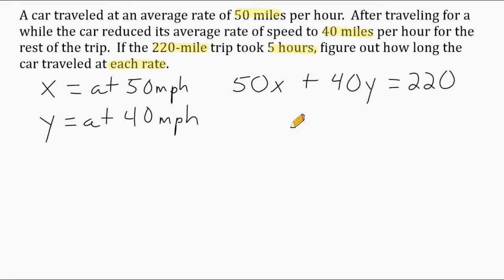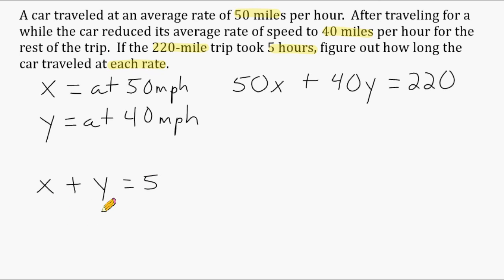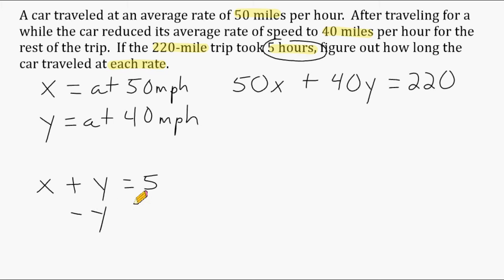We know x is a certain amount of time at 50 miles per hour, and y is a certain amount of time at 40 miles per hour. Those amounts of time must add up to 5 hours total — so x plus y equals 5. Now we have a system of equations. To use substitution, I'll rewrite the second equation, moving y to the other side: x equals 5 minus y.